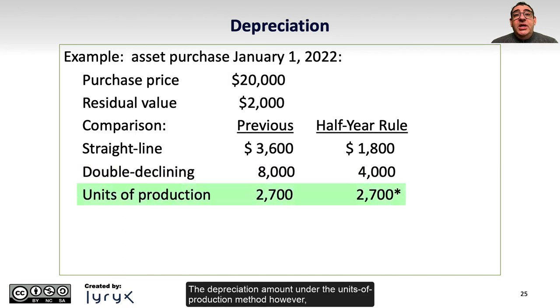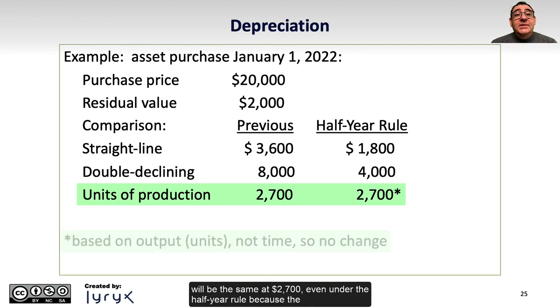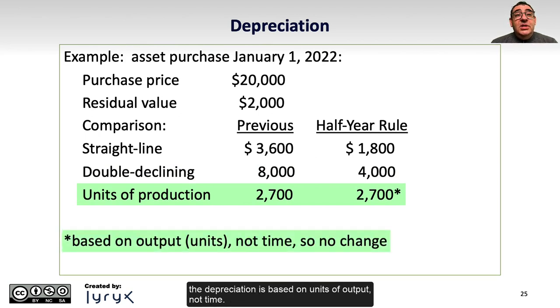The depreciation amount under the units of production method, however, will be the same at $2,700 even under the half-year rule, because the depreciation is based on units of output, not time.